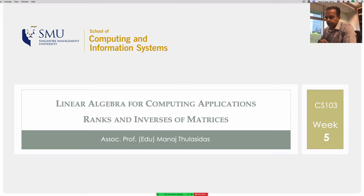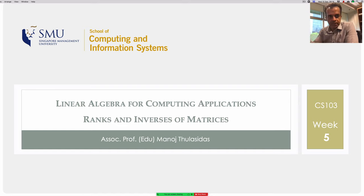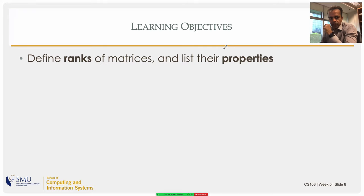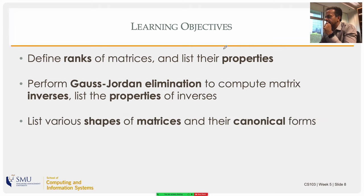Good morning. This is week five — a continuation of last week's algebraic view where we started solving equations. Today we move on to an extension of that algorithm and will start thinking about inverses: given a matrix, what is its inverse and how do we calculate it? We'll also look at different shapes of matrices, redefine ranks and their properties, expand on Gaussian elimination calling it Gauss-Jordan elimination, and use that to compute inverses.